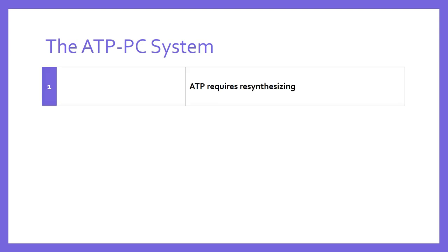In terms of how it works: we'll pick up from the point at which ATP requires resynthesizing. If you need to backtrack, go back to the role of ATP video. We pick up from the point where ATP has been broken down, the energy has been provided for muscular contraction, and we're now left with ADP and some phosphates that need to be resynthesized — put back onto the ADP to resynthesize ATP.